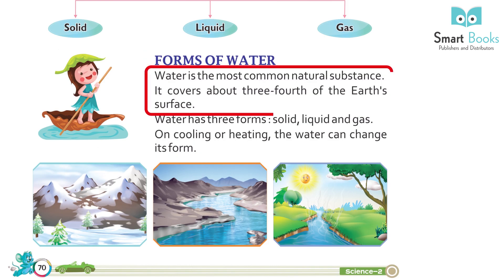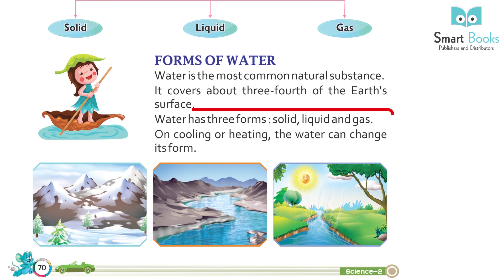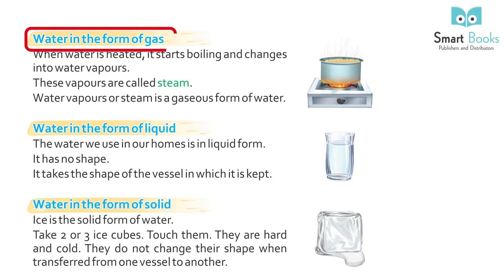Water is the most common natural substance. It covers about three-fourths of the Earth's surface. Water has three forms: solid, liquid, and gas. On cooling or heating, water can change its form.